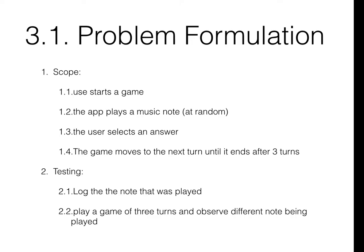Based on that, the scope of this particular iteration is: the user starts the game, the game plays a music note, the user selects an answer, and the game moves to the next turn until it ends — and I'm going to test it with only three turns. Because the game will play a sound at random, we need to know which note was picked. We're going to introduce you to the concept of logging — having the game print to the output screen some values so we can check what the game is doing and compare that log with the answers we select.